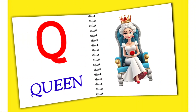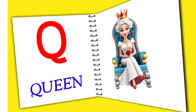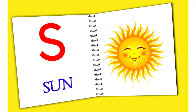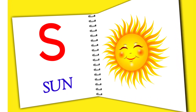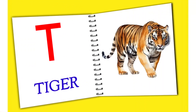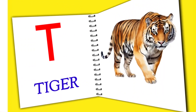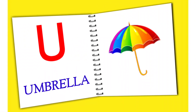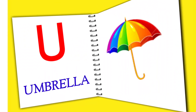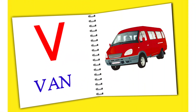Q for queen, R for rose, S for sun, T for tiger, U for umbrella, V for van.